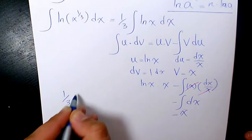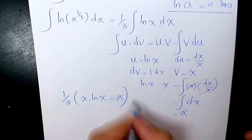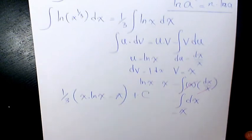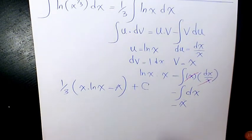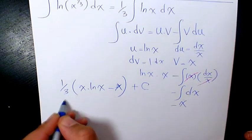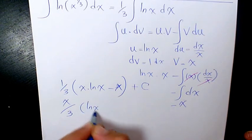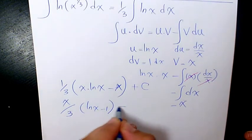So the answer is going to be 1 over 3 times x ln x minus x plus a constant number. Or basically another form: we can factor x out, giving us x over 3 times (ln x minus 1) plus a constant number. Any of these two forms is correct.